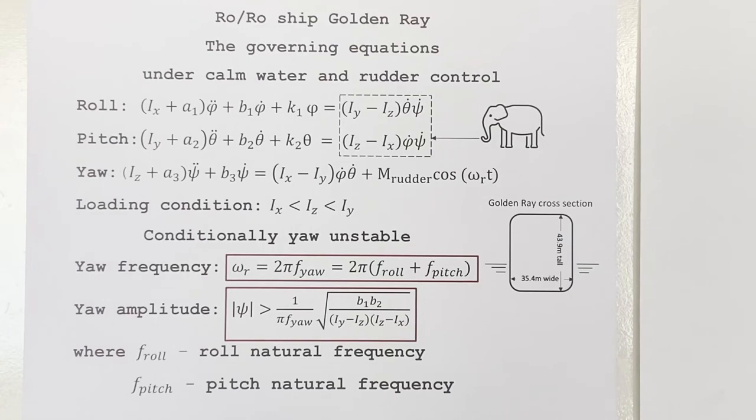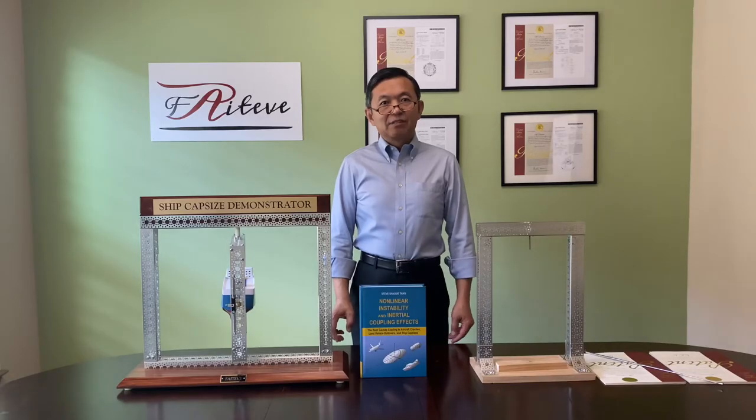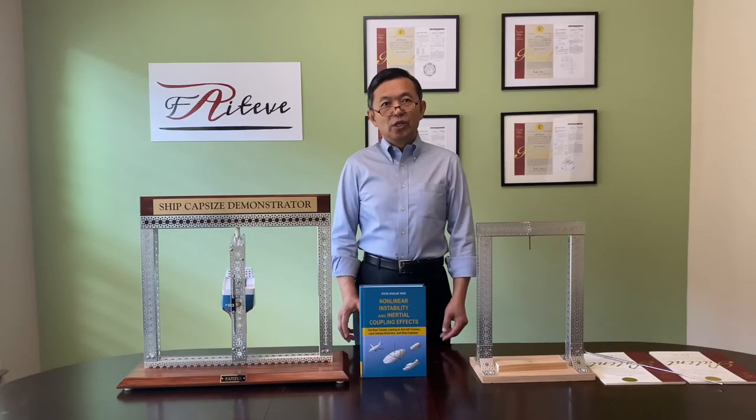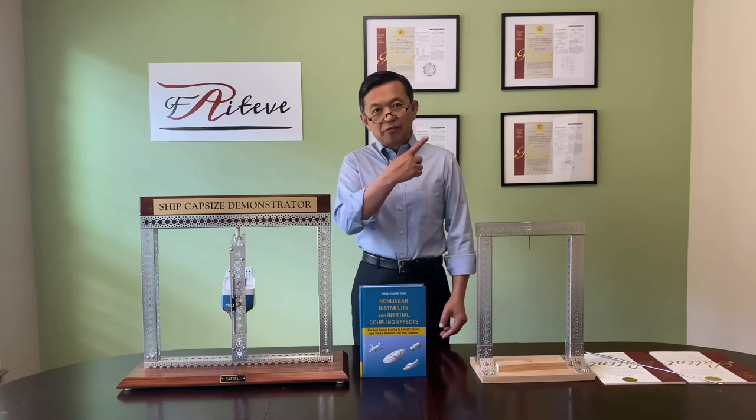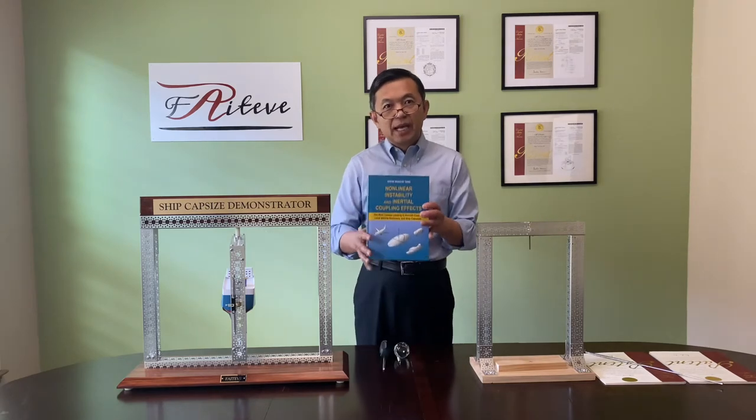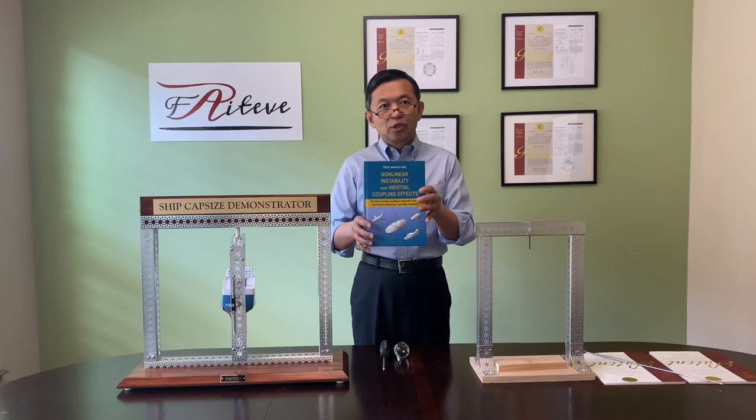That phenomenon says that if yaw frequency equals the summation of roll and pitch natural frequencies, and at the same time its yaw amplitude exceeds a threshold given by this formula, then Golden Ray will have roll and pitch resonances simultaneously. I have summarized all the analytical, numerical, and experimental proofs for that phenomenon in this book, and I published it in October 2018.